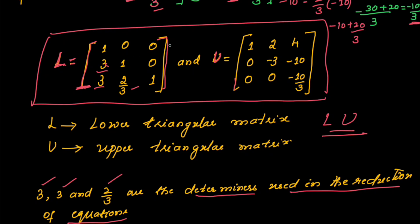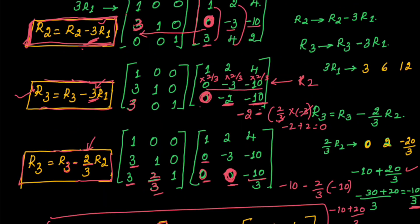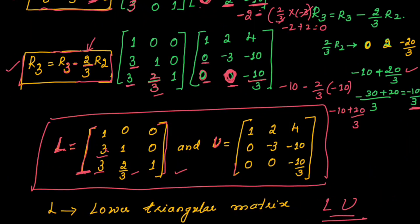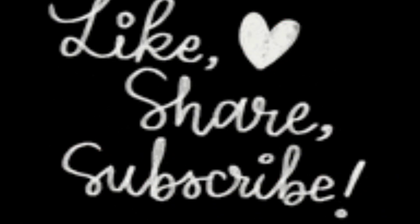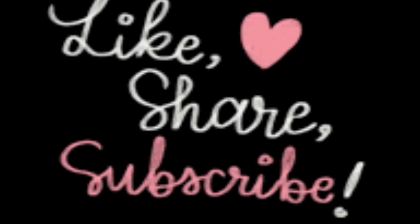The lower triangular matrix initially was an identity matrix and later got converted into its final form through the three row operations carried out. These are the different steps used in matrix decomposition. Hope you find this session helpful. Please like, share, and subscribe to my channel. Thank you. Bye-bye and take care.